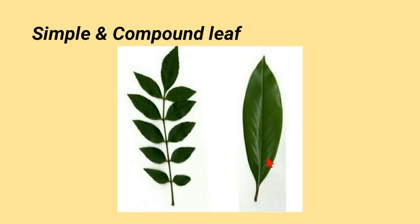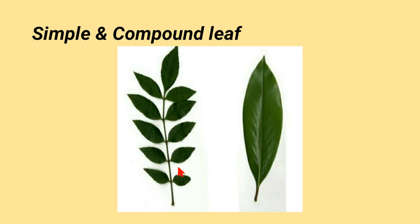First we're going to classify leaves into two types: simple leaves and compound leaves. Simple leaves are those in which the lamina is large and undivided. But if the leaf is divided into smaller leaflets, it is called a compound leaf.